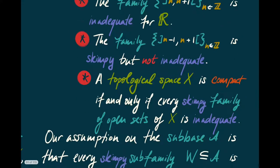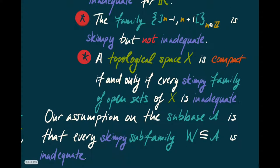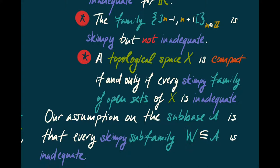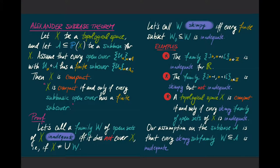We have the words skimpy and inadequate, and our assumption is going to be that the subbase A has the property that every skimpy subfamily is inadequate — if a subfamily of our subbase is skimpy, so that every finite subset fails to cover, then the whole thing fails to cover. Our assumption is that every skimpy subfamily of A is inadequate, and we need to prove that every skimpy family of open sets whatsoever is inadequate. That will prove the Alexander Subbase Theorem and show that X is compact.